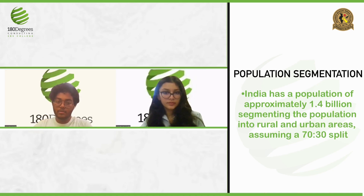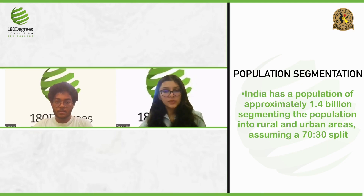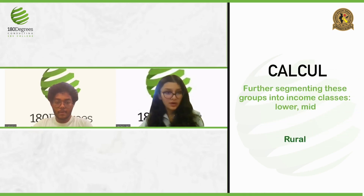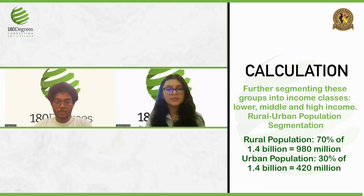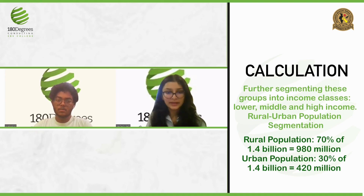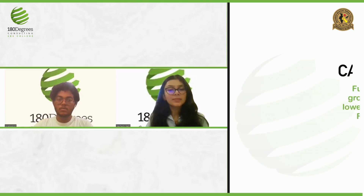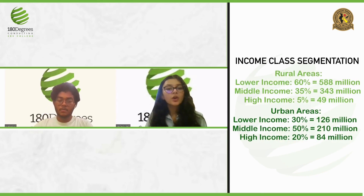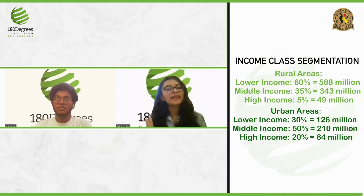Moving forward, I'll break down these groups into income classes — lower, middle, and high income — which will help identify potential iPhone buyers. Rural population is approximately 70% of 1.4 billion, coming out to approximately 980 million. Urban population at 30% comes out to 420 million. For rural income segmentation: lower income is 60%, which is 588 million; middle income is 35%, approximately 343 million; and high income is 5%, which is 49 million.